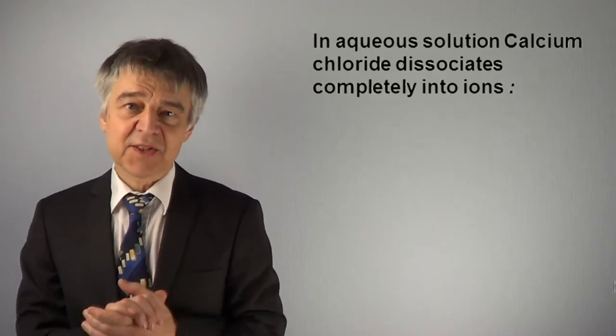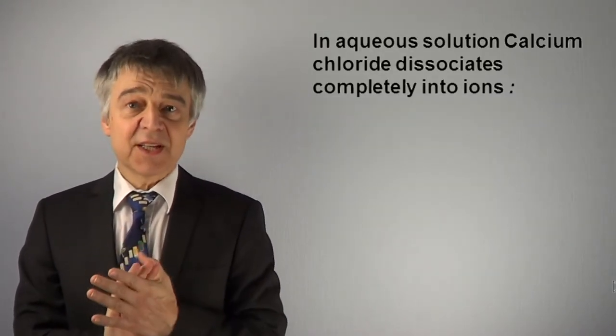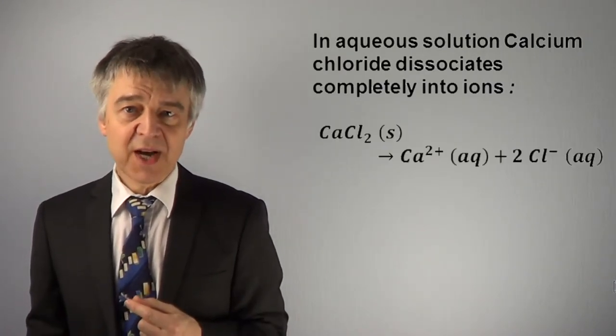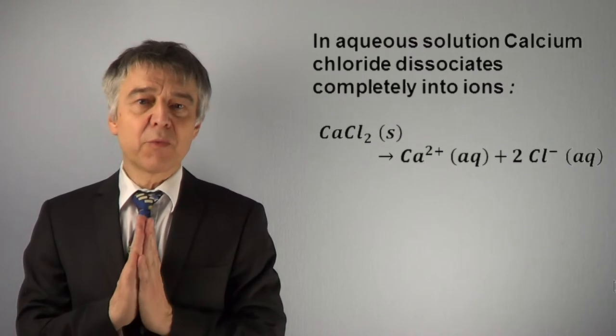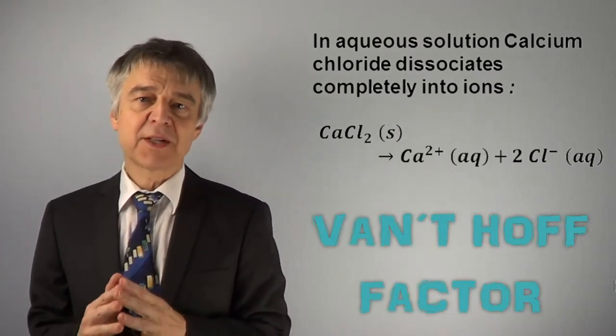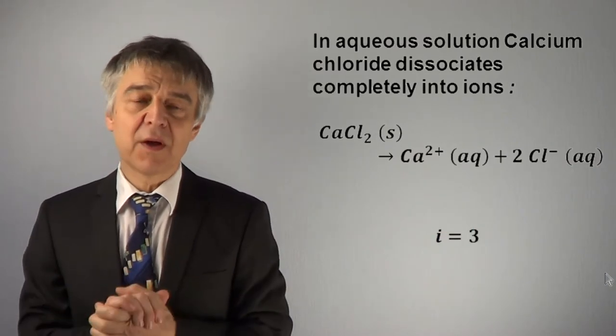In aqueous solution, calcium chloride dissociates completely into ions. For every mole of calcium chloride, we end up with 3 moles of ions. That is, Van't Hoff factor i is equal to 3.